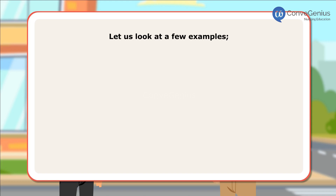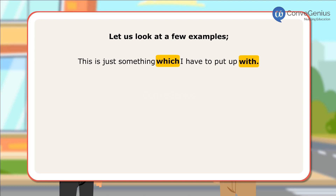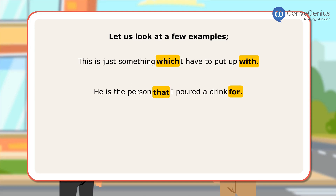Let us look at a few examples. 'This is just something which I have to put up with.' Used with a phrasal verb in the relative clause. 'He is the person that I poured a drink for.' Here, for is used as the relative pronoun is functioning as the indirect object of the verb in the relative clause.